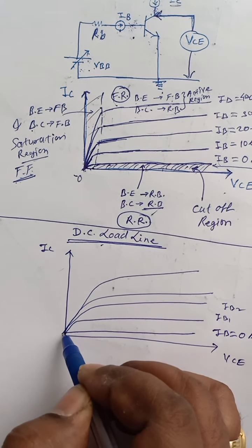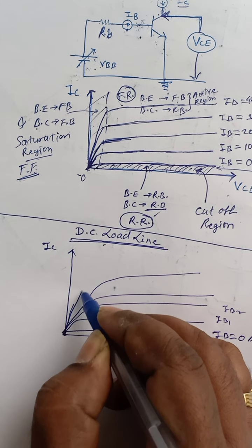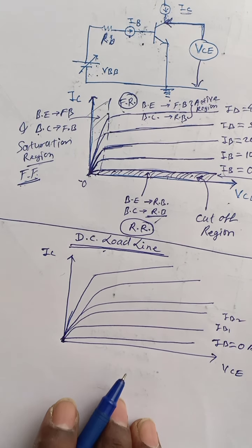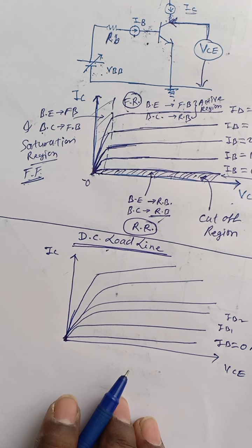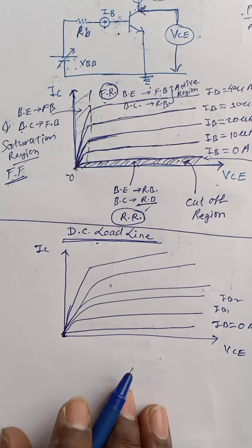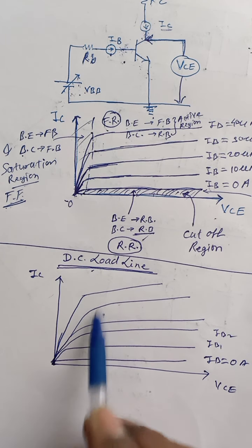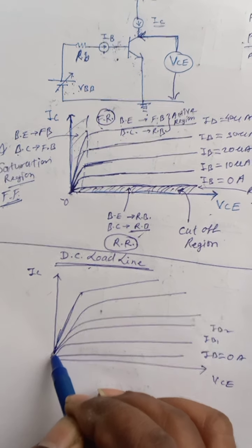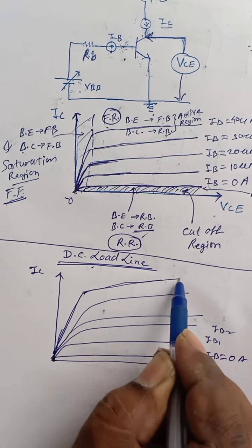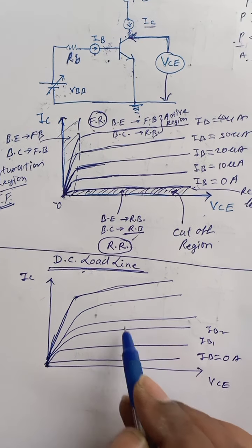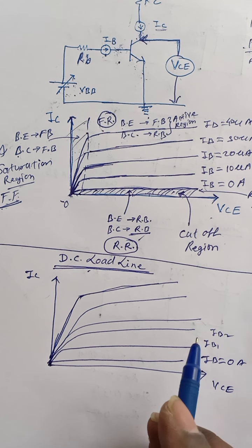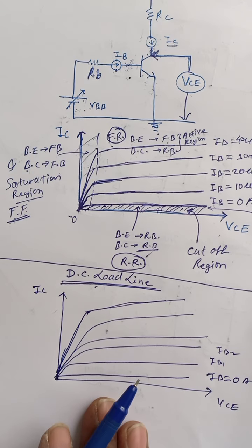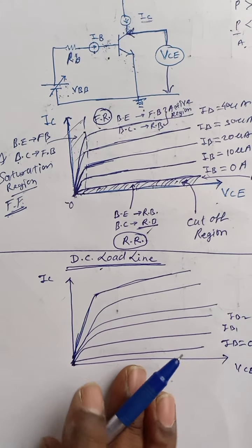To operate the transistor as an amplifier, you have to operate it in a proper way — that means the base-to-emitter junction is forward biased and the base-to-collector junction is reverse biased. We are going to draw a DC load line on which the transistor should operate. This is the operating point for the transistor in amplifier use, shown on the characteristic curves.